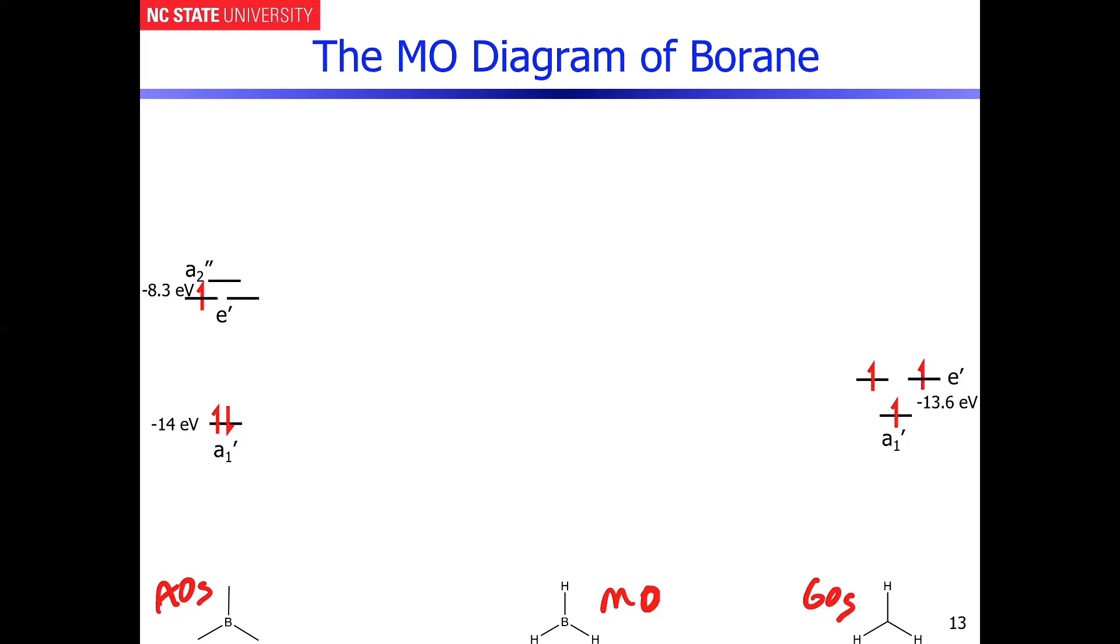On the left side, A1 prime—this is because of the 2s orbital that's on boron. And then these are the 2px and 2py here, and then the 2pz is the A2 prime or A2 double prime orbital that does not have a symmetry match.